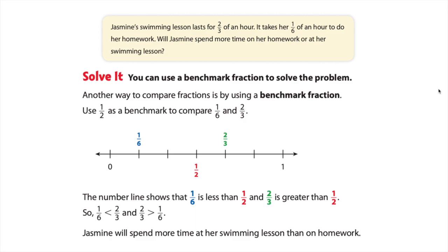So using that one-half as a benchmark we could have shortcut that a little bit. The number line shows that one-sixth is less than one-half and that two-thirds is greater than one-half. This might have been something that you were already able to visualize in your head. You know that one-half is equivalent to three-sixths, so one-sixth would have to be less than a half.